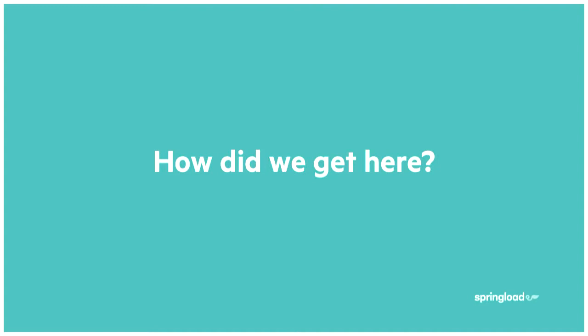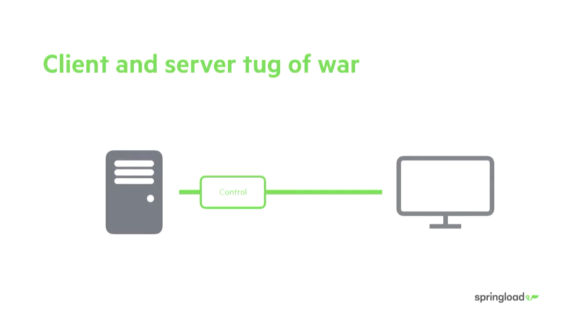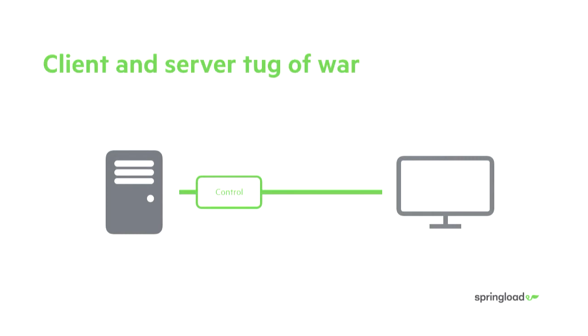How did we get here? The server and the client are in this kind of tug of war with each other. Over the last ten years, as JavaScript has progressed, the client's been trying to pull control closer to where the user is — trying to control routing and rendering on the device itself rather than the server. By server, we're talking about traditional programming languages like PHP, Python, and Ruby, using frameworks or CMSs like WordPress, Drupal, Rails, and Django. But we're quickly moving towards client-side JavaScript apps using tools like Backbone, Ember, Angular, and React.